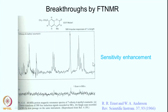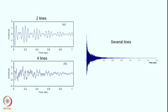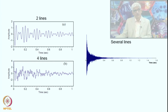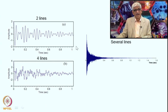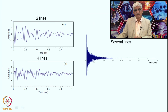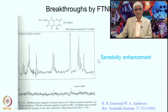This was a major breakthrough. You collect the entire spectrum in a few hundred milliseconds — the pulse lasts only a few microseconds, then you collect the FID for a few hundred milliseconds, and a computer Fourier transformation generates a complete frequency-domain NMR spectrum. That is the sensitivity enhancement you achieve.